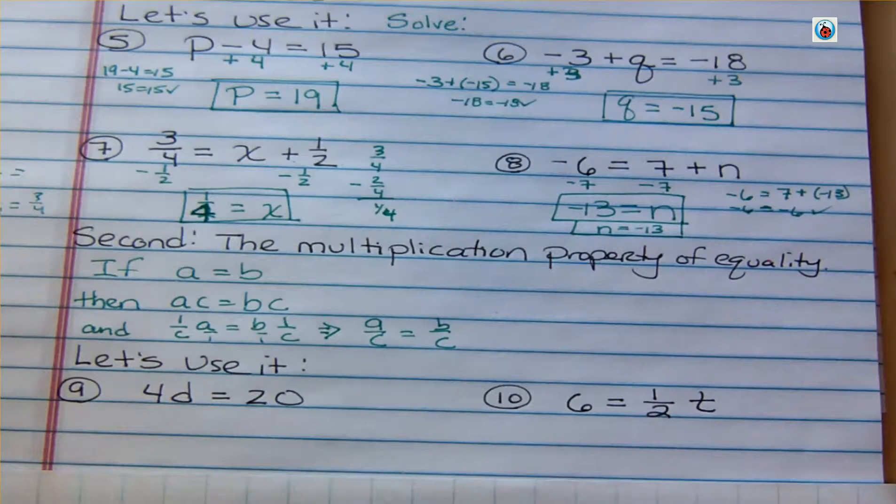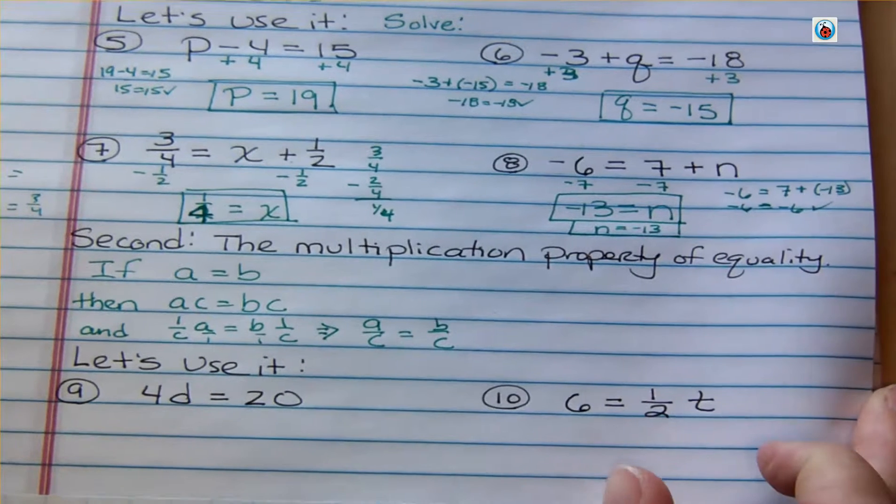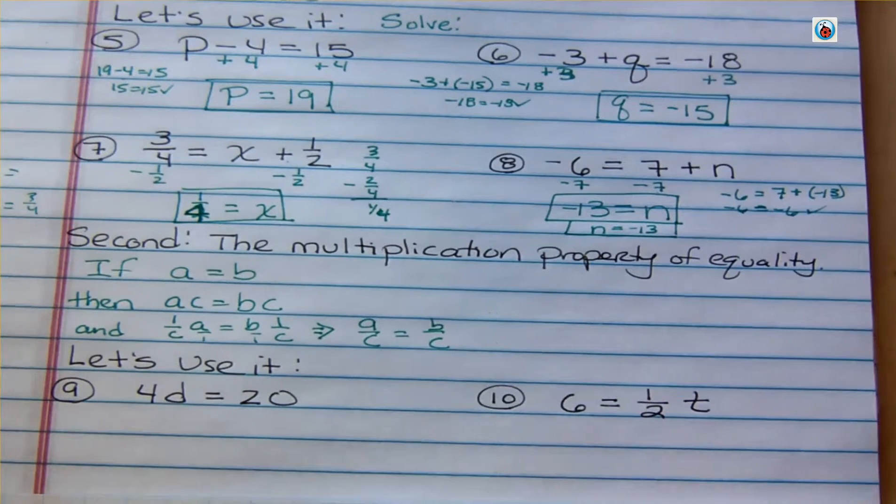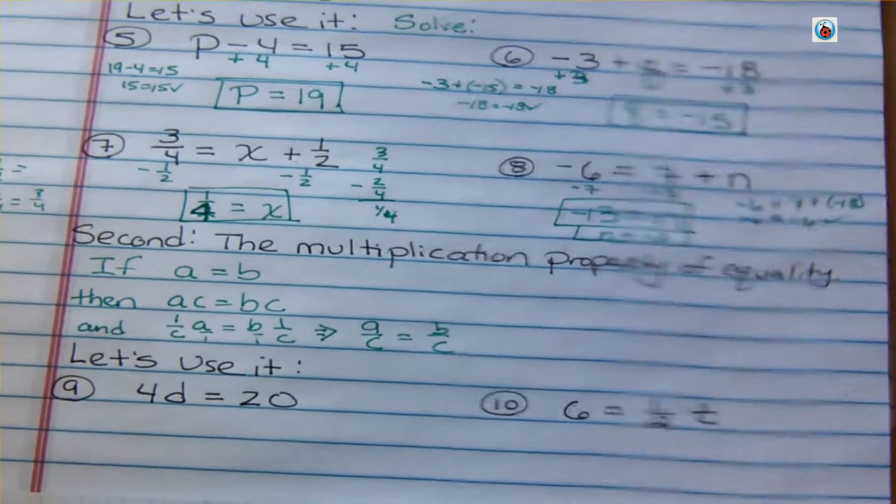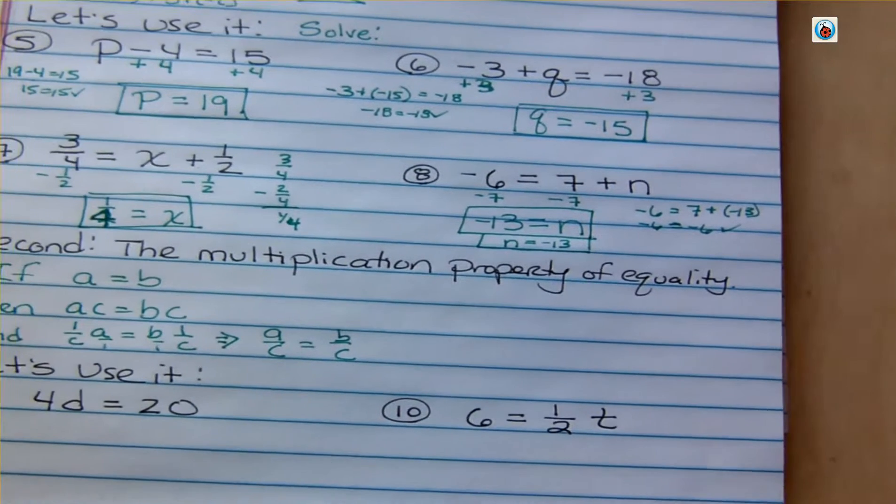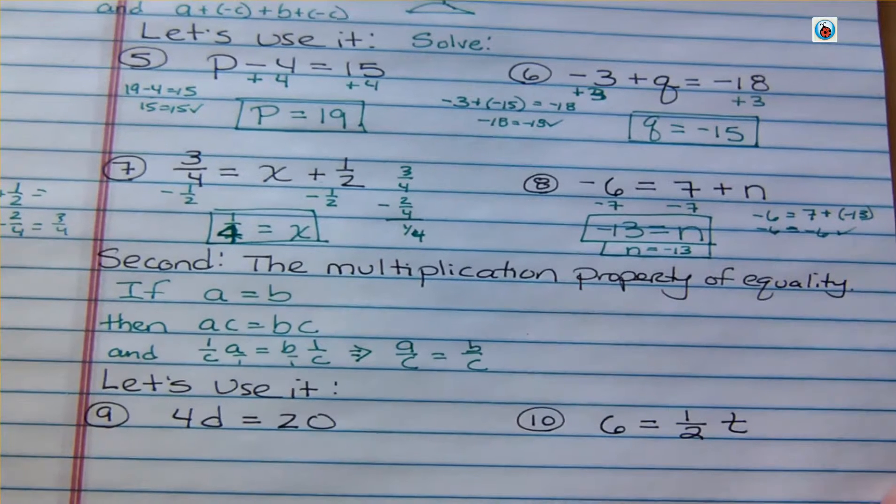So to start off, we're saying 4 times D equals 20. And we could solve that one by inspection probably, or most of us could anyway. I think my camera's a little crooked and it's bugging me, but this probably isn't a good time to fix that. Yeah, maybe that's better.